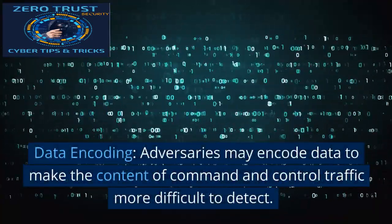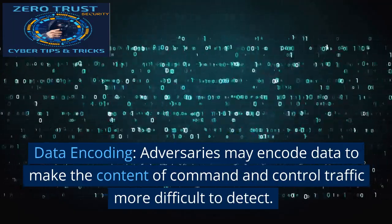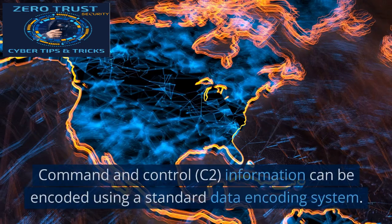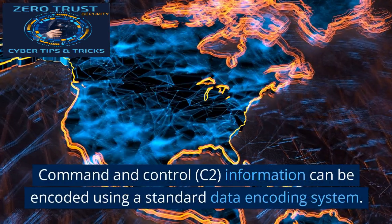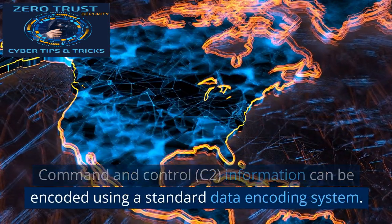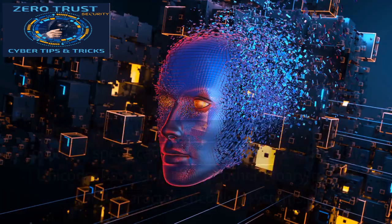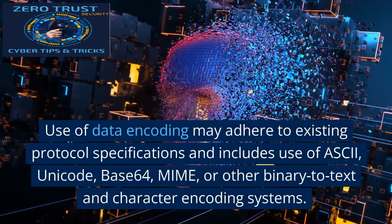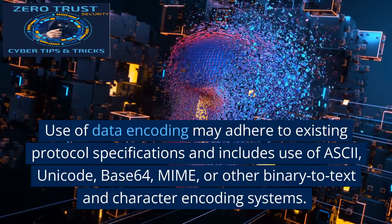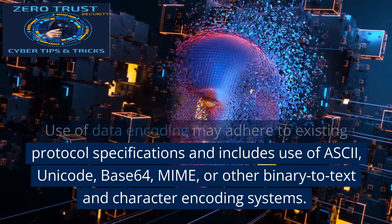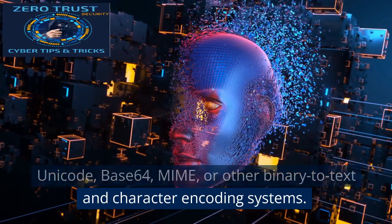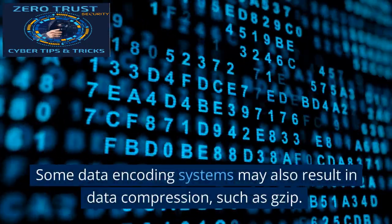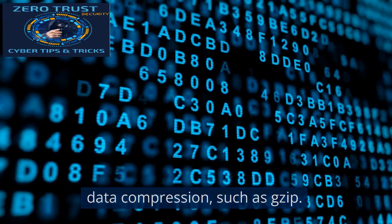Data encoding: Adversaries may encode data to make the content of command and control traffic more difficult to detect. Command and control (C2) information can be encoded using a standard data encoding system. Use of data encoding may adhere to existing protocol specifications and includes use of ASCII, Unicode, Base64, MIME, or other binary-to-text and character encoding systems. Some data encoding systems may also result in data compression, such as gzip.